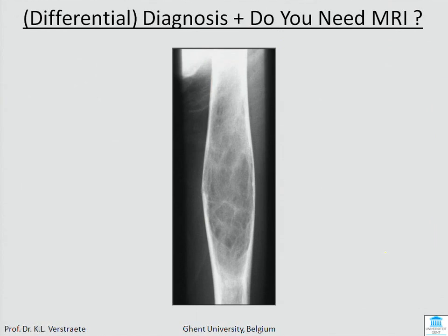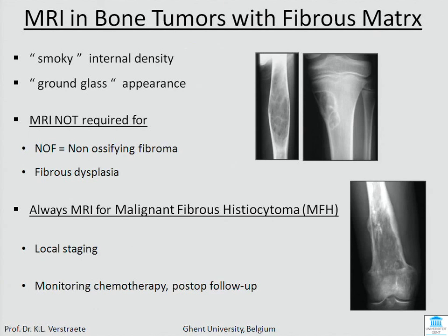Next case — any idea what this is? This is a femur, and it has a smoky appearance, or ground glass appearance. We know this in fibrous dysplasia. This one here is fibrous dysplasia and you don't need MRI. And for non-ossifying fibroma, you don't need CT, you don't need MRI — it's a don't-touch lesion.